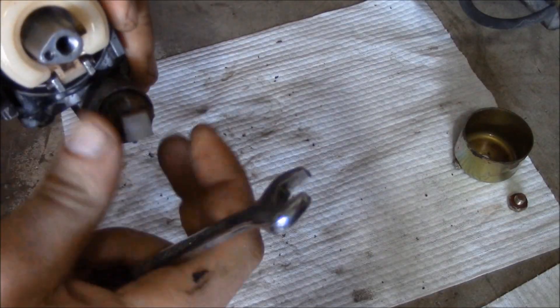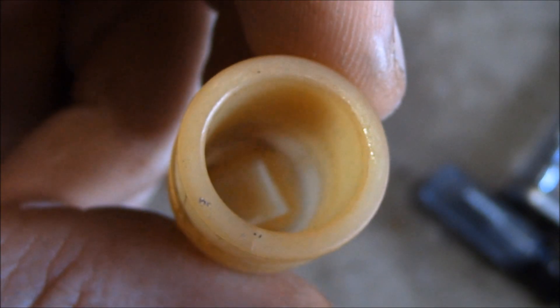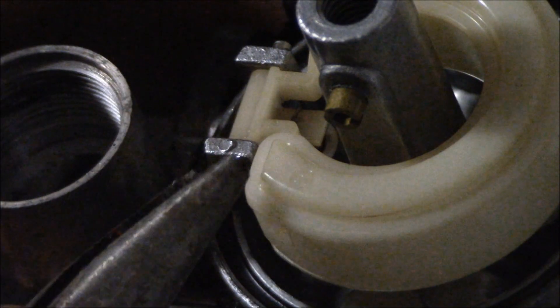Alright, on to the next thing, which is the cup. This is a little tricky. It looks like rust and varnish built up in it, so I'll just use a Q-tip, carb cleaner, spray it out.